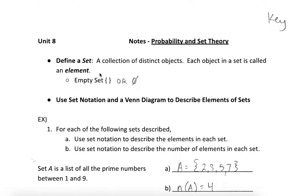And each of the pieces of that set, each of the parts, is called an element. If we have an empty set, oftentimes it's just symbolized with nothing in between two sets of braces. Or sometimes we use the null symbol, just a zero with a slash through it.